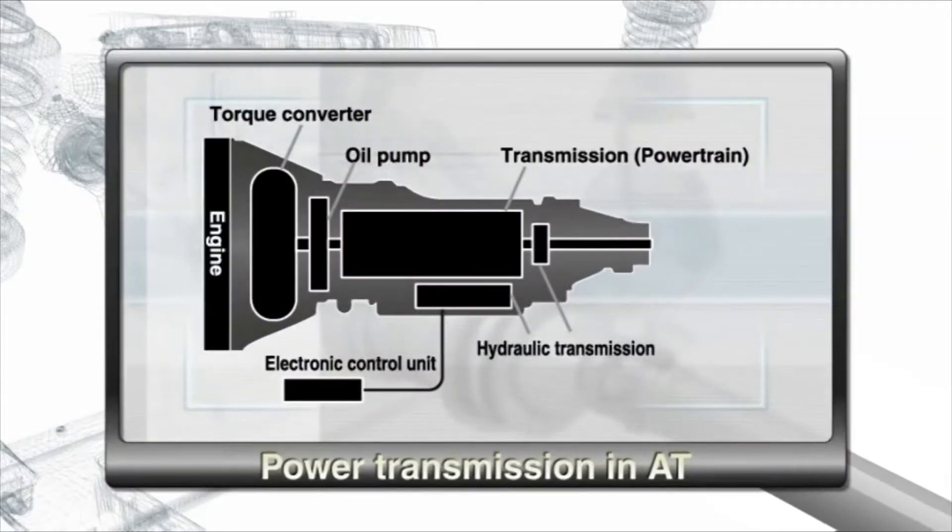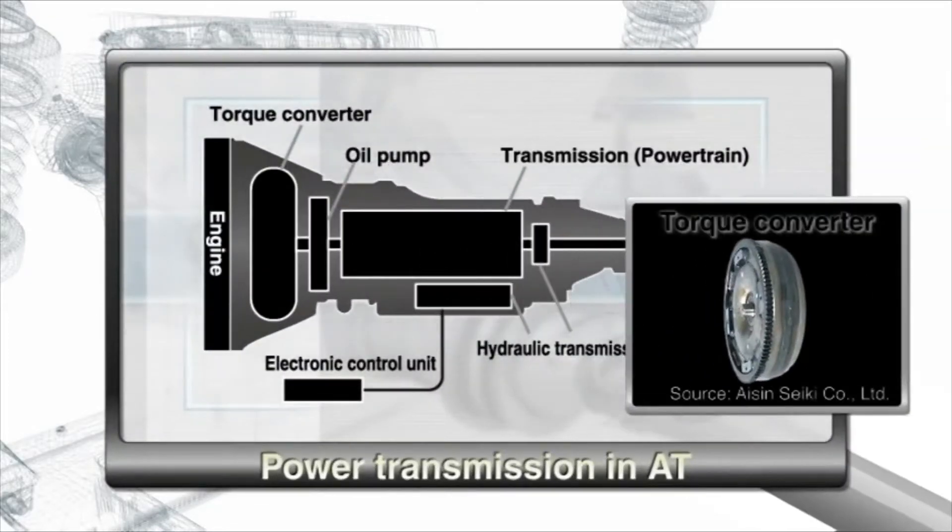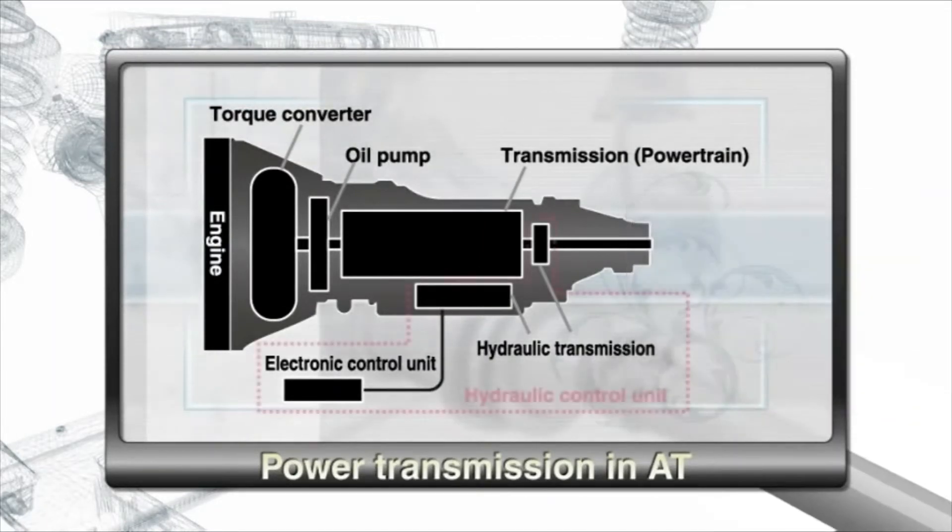In automatic transmissions, the torque converter replaces the job of the clutch. It is housed together with the transmission and the hydraulic control unit that provides the necessary pressure to automate gear ratio changes.